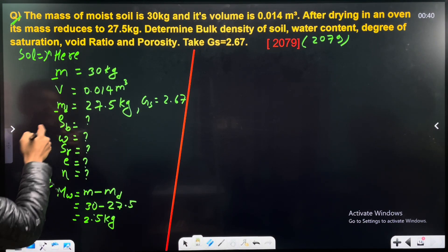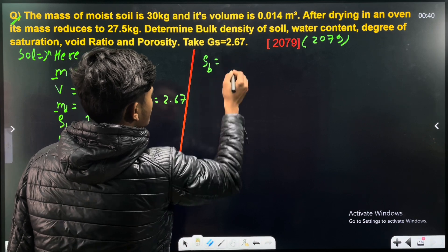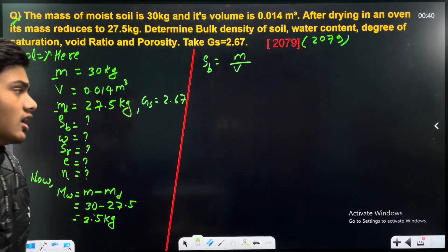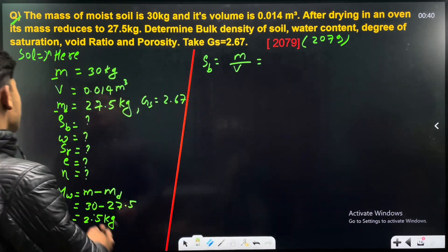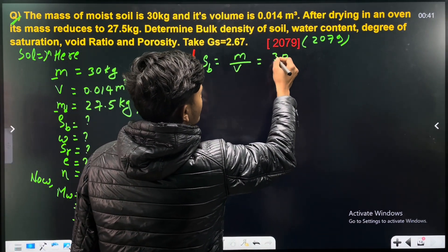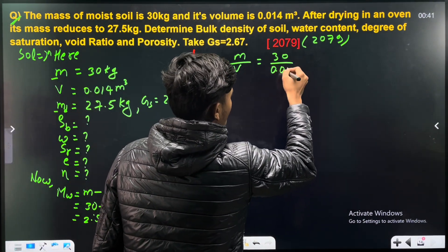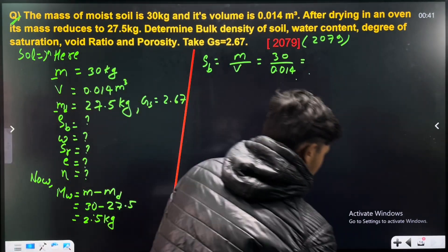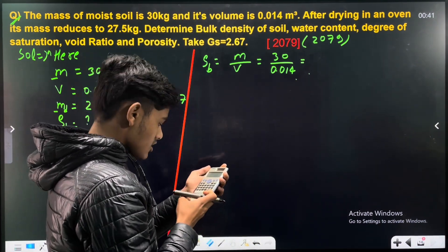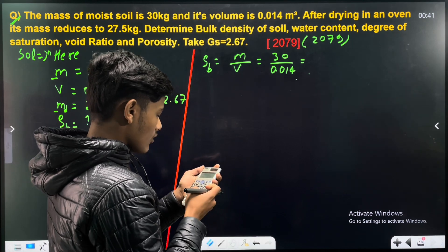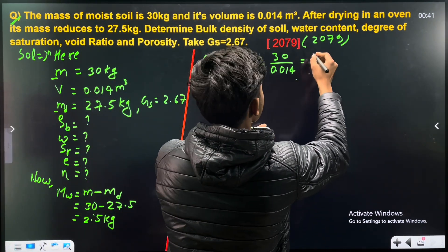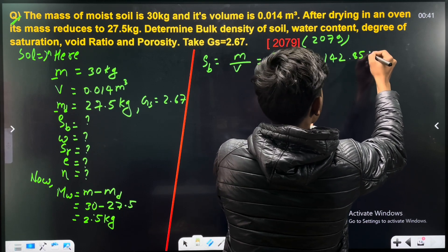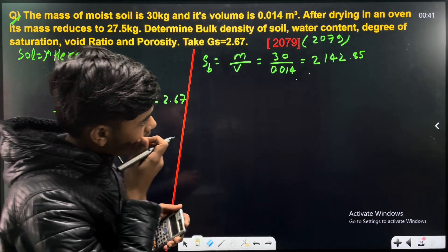Now we will calculate bulk density. The formula for bulk density is total mass divided by total volume. Total mass is 30 kg and total volume is 0.014 cubic meters. So 30 divided by 0.014 gives us 2142.85 kg per cubic meter.